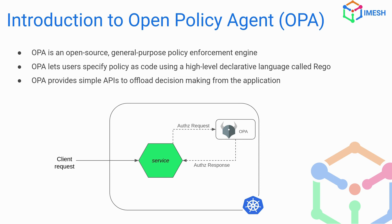Open Policy Agent is the general-purpose policy enforcement agent. It is open source and it uses a language called Rego. In the normal authorization flow, a request comes into a service, the service sends an authorization request — in our case to Open Policy Agent — and Open Policy Agent will perform some computation and return an allow or deny response.